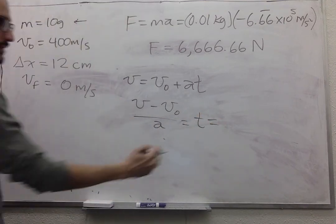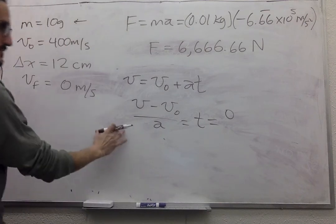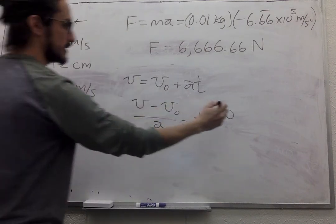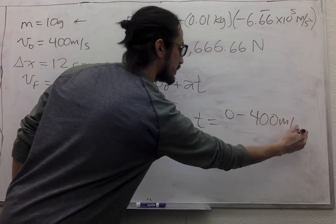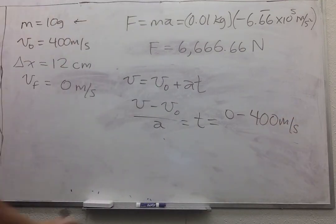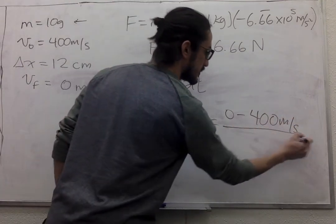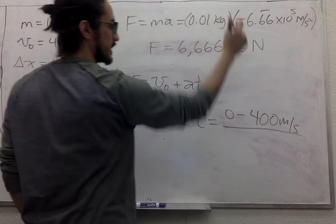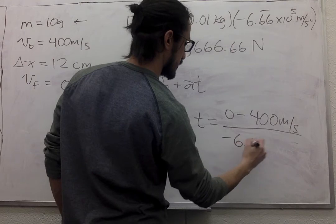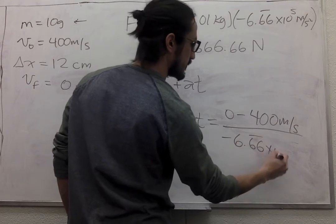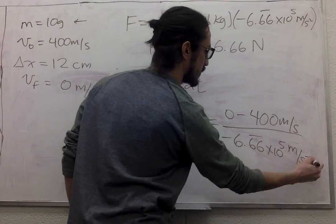Final velocity is 0. Initial velocity is 400. Acceleration is negative 6.66 times 10 to the 5 meters per second squared.